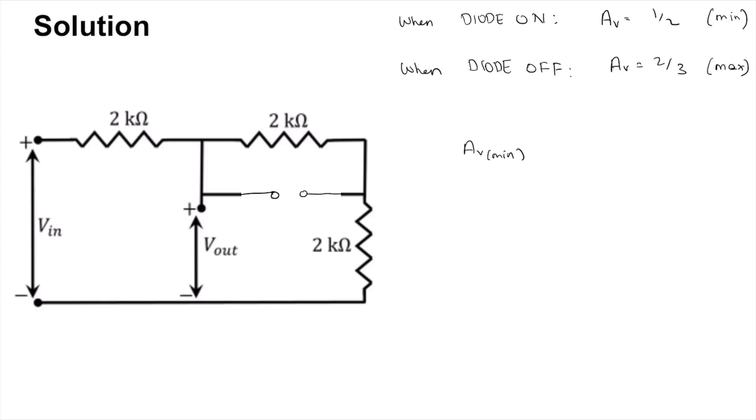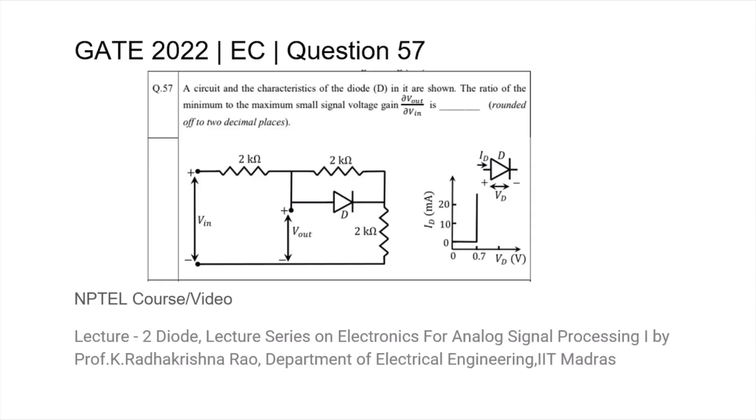This is going to be 1 by 2 divided by 2 by 3 which is 3 by 4, or 0.75. That's the answer, 0.75.